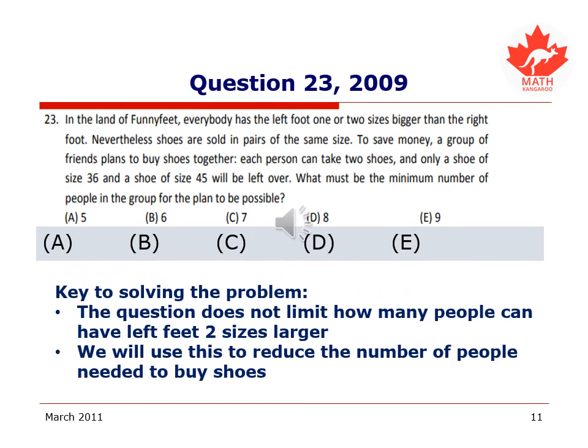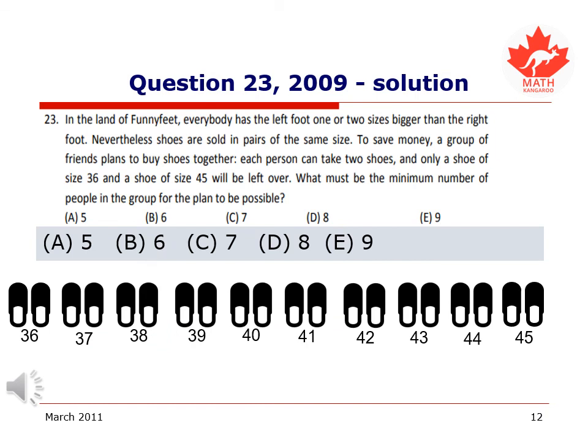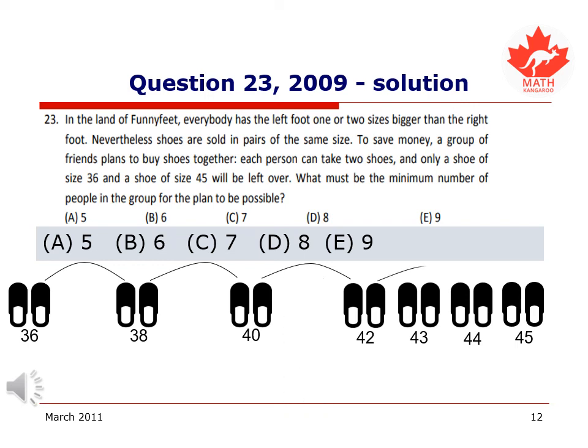The key to solving this problem is that the question doesn't limit how many people can actually have left feet two sizes larger, and we will use this to reduce the number of people needed to buy the shoes. We're going to use as many people with a left size two sizes bigger than the right as possible to reduce the number of people that are needed to buy shoes and still have a size 36 and a size 45 left over. If we start immediately with someone with a size 36 and then a left size of 38, this removes the need for a 39. Someone with a size 40 and then a left size of 42 removes the need of a 41. And someone with a size 42 and a left size 44 removes the need for a 43.